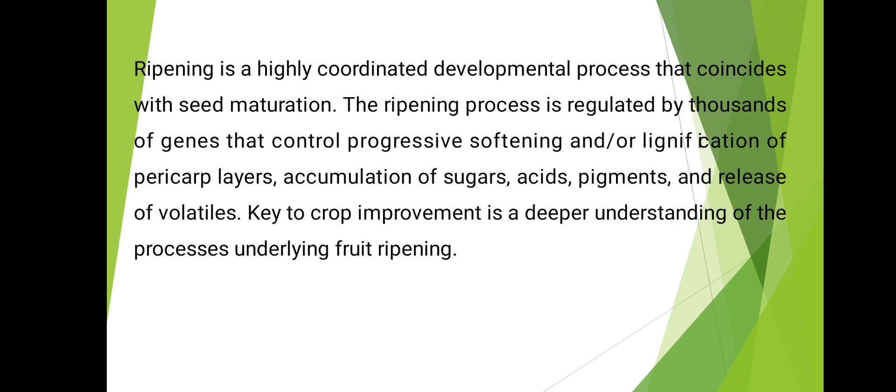Ripening is a highly coordinated developmental process that coincides with seed maturation. The ripening process is regulated by thousands of genes that control progressive softening and/or lignification of pericarp layers, accumulation of sugars, acids, pigments, and release of volatiles.